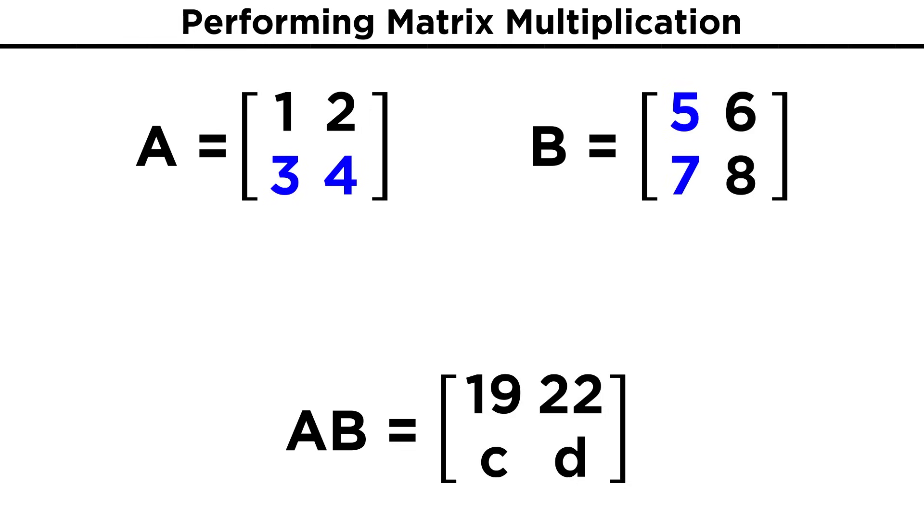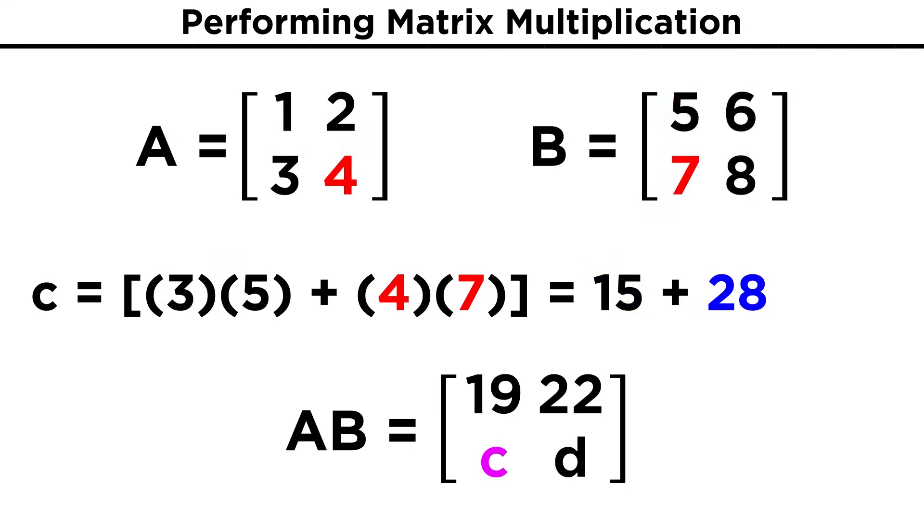Now we shift to the second row of the first matrix and go back to the first column of the second matrix. Three times five is fifteen, four times seven is twenty-eight, fifteen plus twenty-eight is forty-three, so that will go in the first entry for the second row of the product matrix.